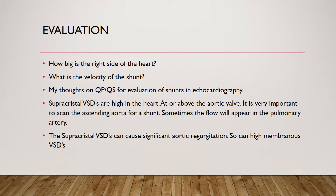Supracristal VSDs are high in the heart, at or above the aortic valve. It's very important to scan the ascending aorta for a shunt — scan from the ascending aorta down toward the aortic valve to see if there's a shunt just above the aortic valve. Sometimes the flow will appear in the pulmonary artery, meaning you'll see the shunt go into the pulmonary artery — in those cases you definitely have a supracristal VSD. Supracristal VSDs can cause significant aortic regurgitation, as can high membranous VSDs.